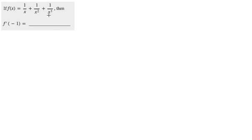So in this problem, we are going to find the derivative of this function f of x at negative one. So first we'll find the general derivative f prime of x. Now to do that, we're going to need to rewrite each of these three terms so that they are not fractions.